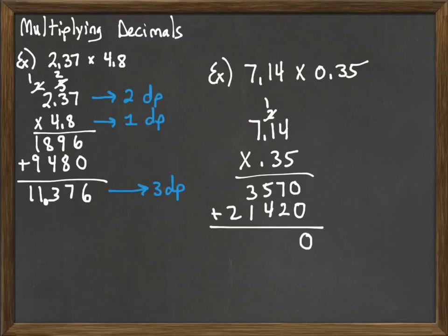0 and 0 is 0. 7 and 2 is 9. 5 and 4 is 9. 3 and 1 is 4. 2 and nothing is 2.